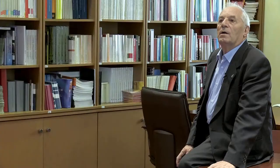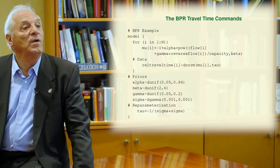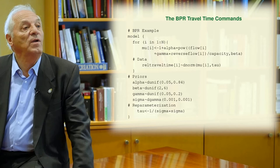This is the commands table. And then you have several paths. First, on the top, we have the BPR example, the model, in which you define the mean value, mu of i.